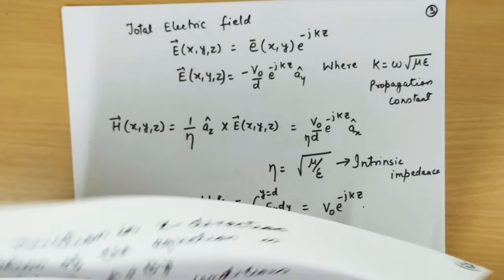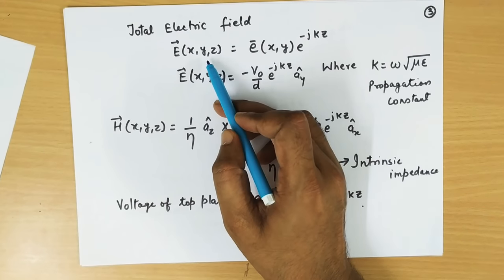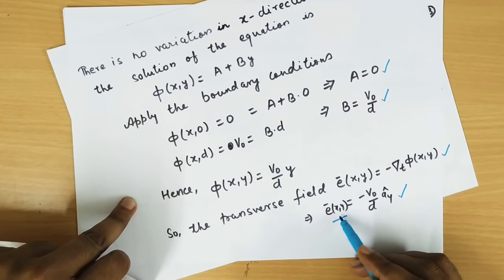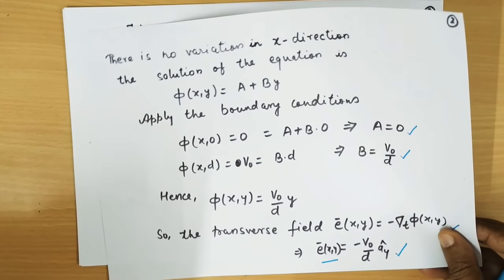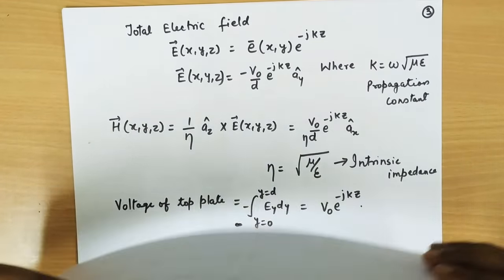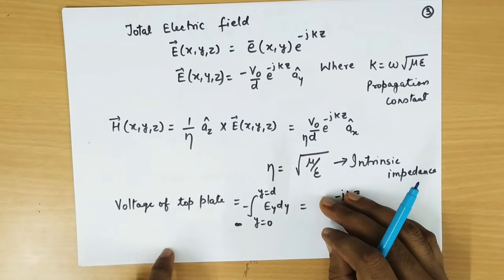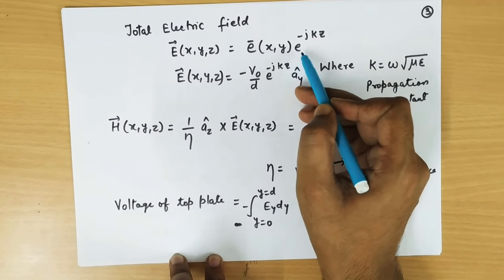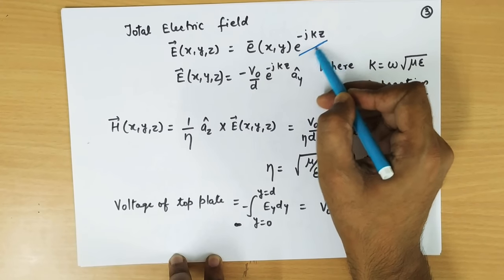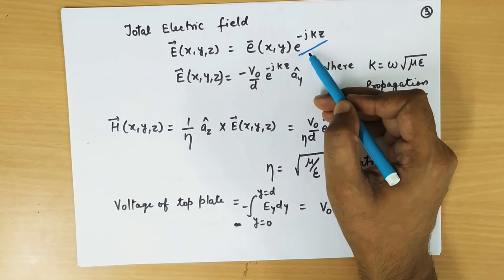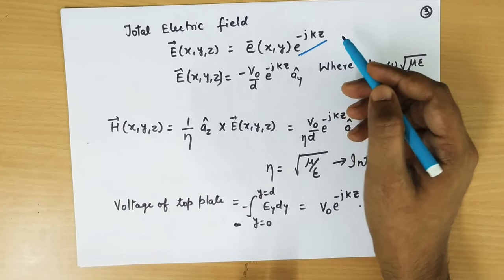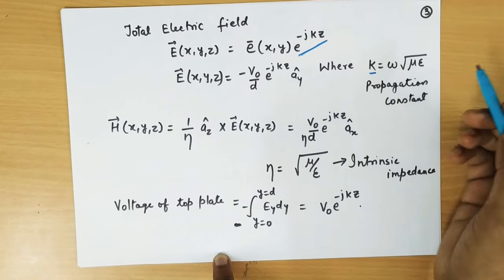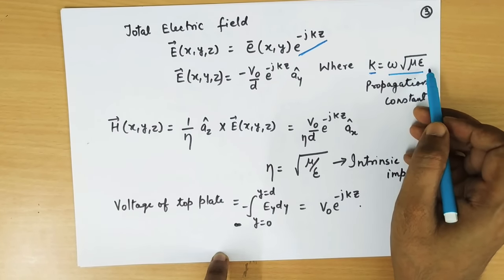Now by knowing this electric field, we can find the total electric field. So far we have only taken x and y coordinates. The electric field here is in the x and y direction, and the z direction component depends upon the propagation constant, because the wave is propagating in the z direction. So the total electric field can be written as the transverse electric field times e to the power minus jkz, where this phase component shows that the wave is propagating in the z direction.